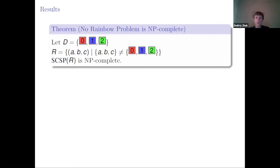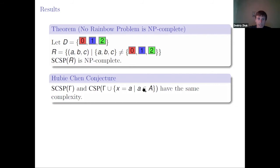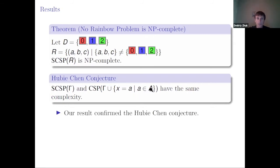The first main result of my talk is the theorem that the no rainbow problem is NP-complete. I want to revisit Hubert Chen's conjecture: the complexity of surjective CSP and the complexity of CSP over gamma with all constant relations are the same. This would be amazing because it characterizes everything simply in terms of polymorphisms.